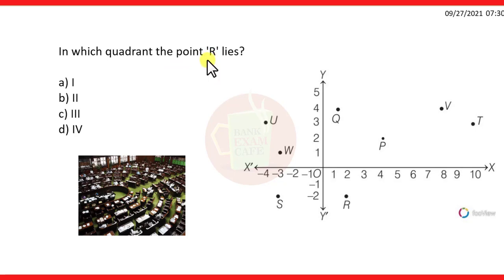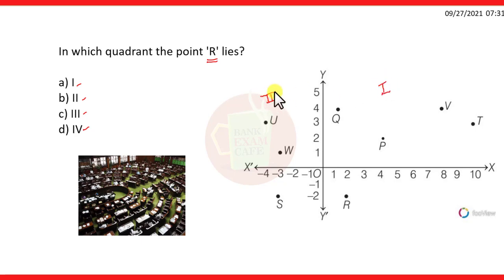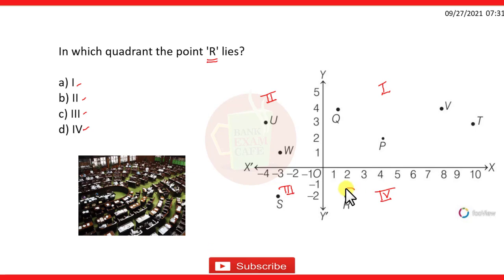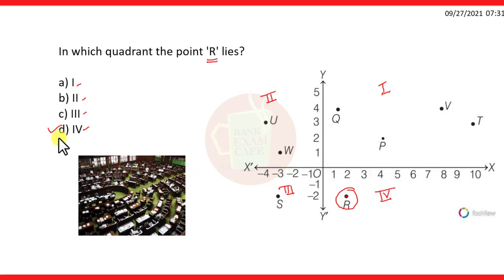The next question: in which quadrant does point R lie — first, second, third, or fourth quadrant? This is the first quadrant, this is the second quadrant, this is the third quadrant, and this is the fourth quadrant. The position R lies in the fourth quadrant, so option D is the correct option.